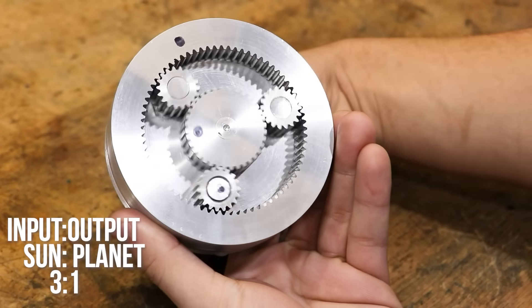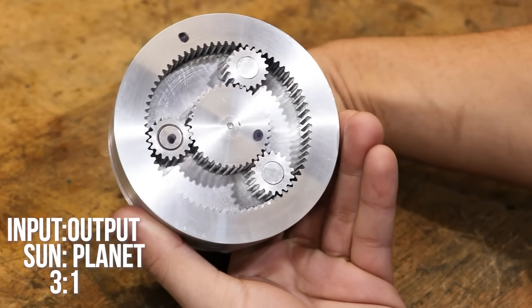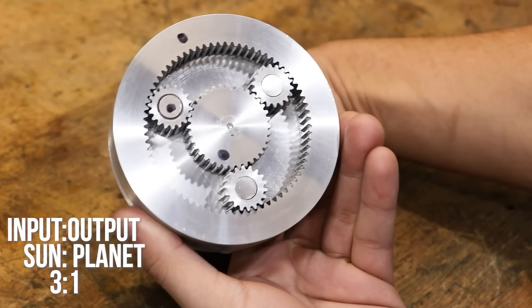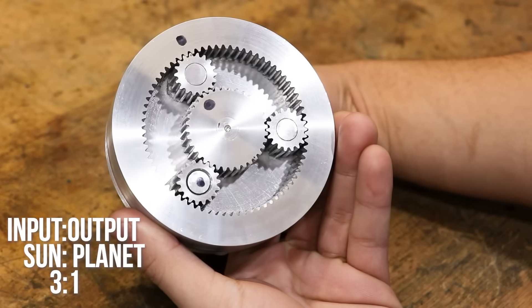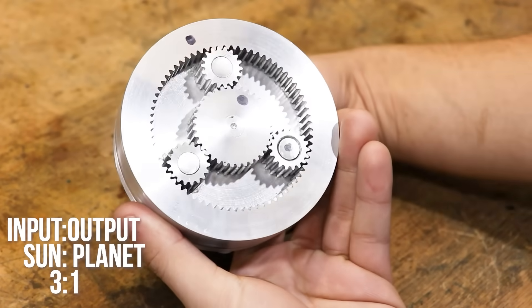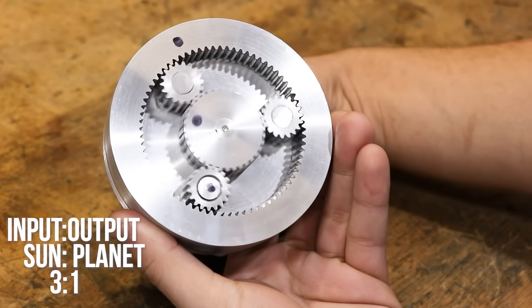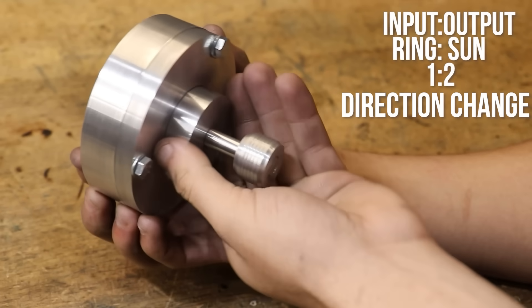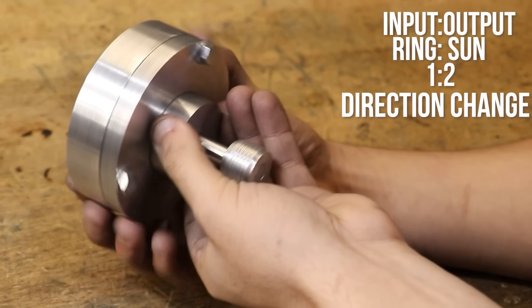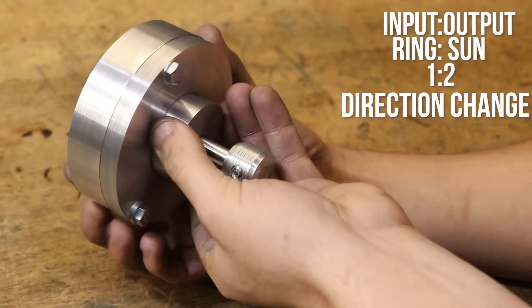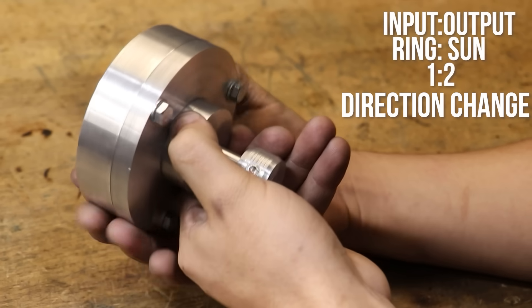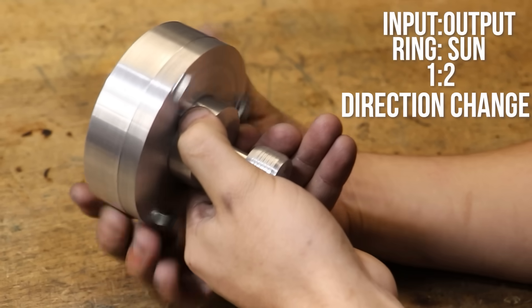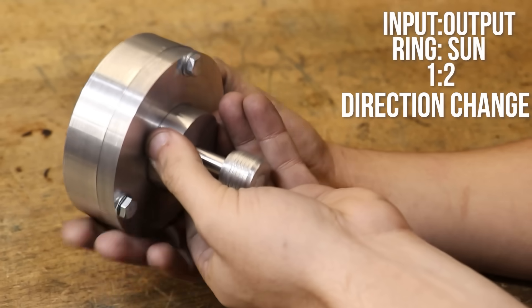So for example, if the input is the sun gear, the planet is the output and the ring gear is held stationary, we'll get a three to one speed reduction with this gear set and the direction of the output will be the same as the input. However if we make the carrier stationary, make the ring gear our input and the sun gear our output, we now get a one to two speed increase and the direction of the output has flipped. And trust me, this will be important later on.